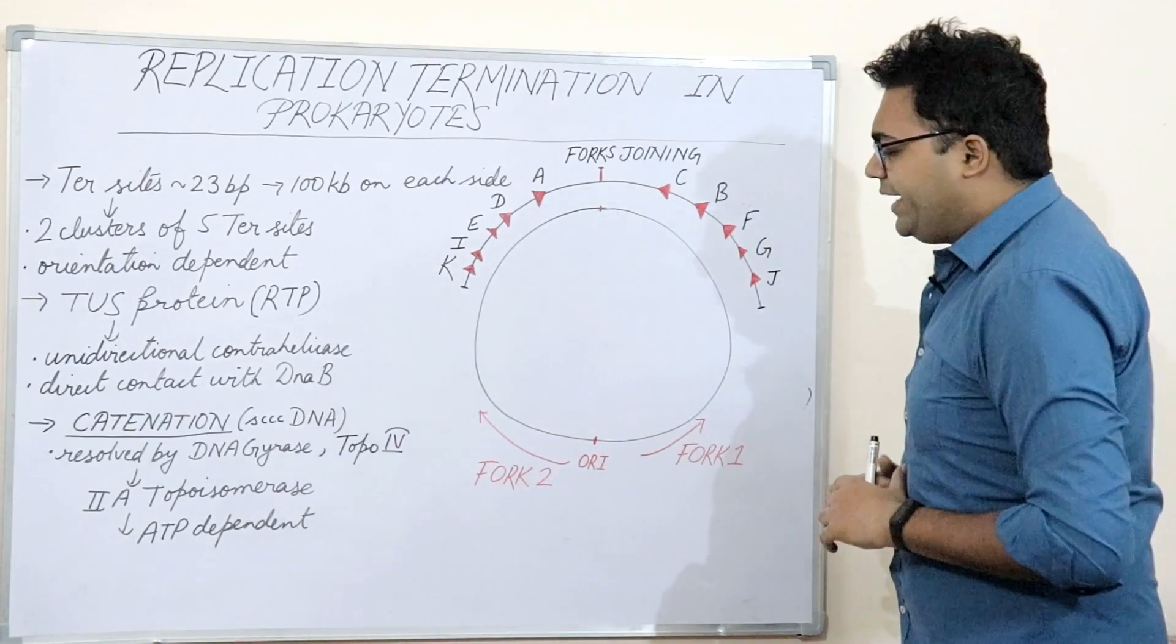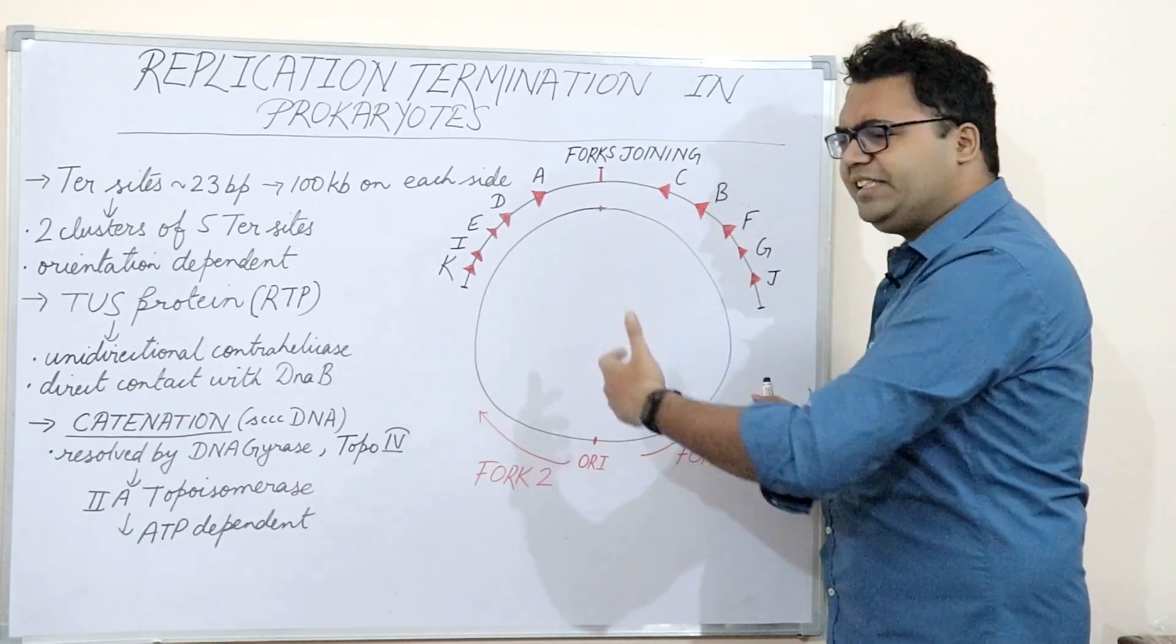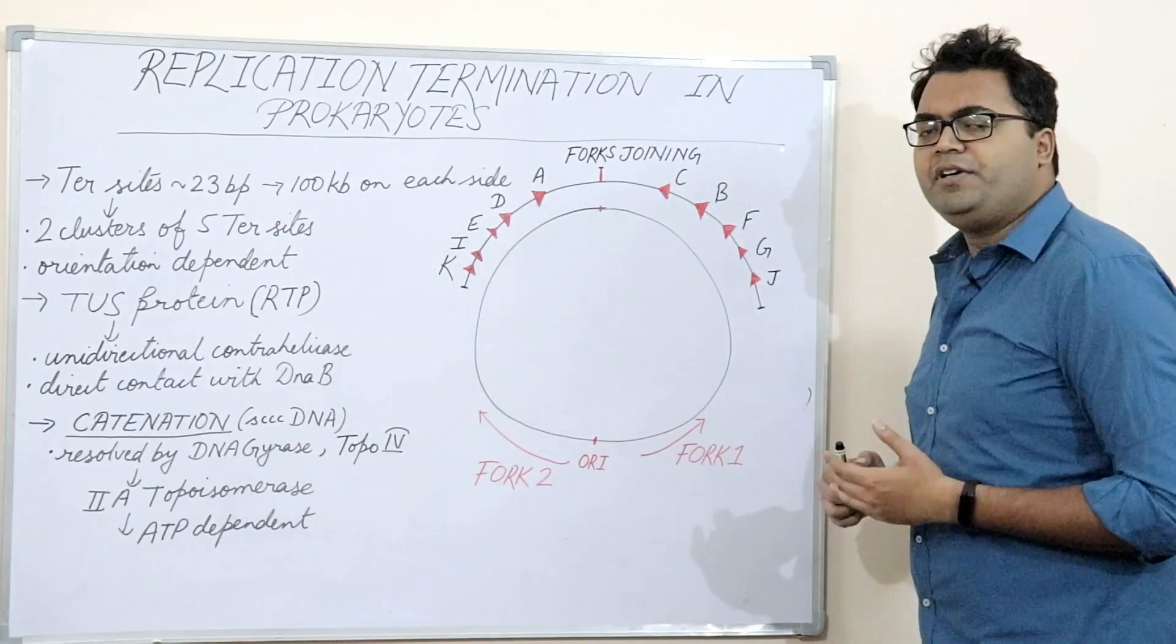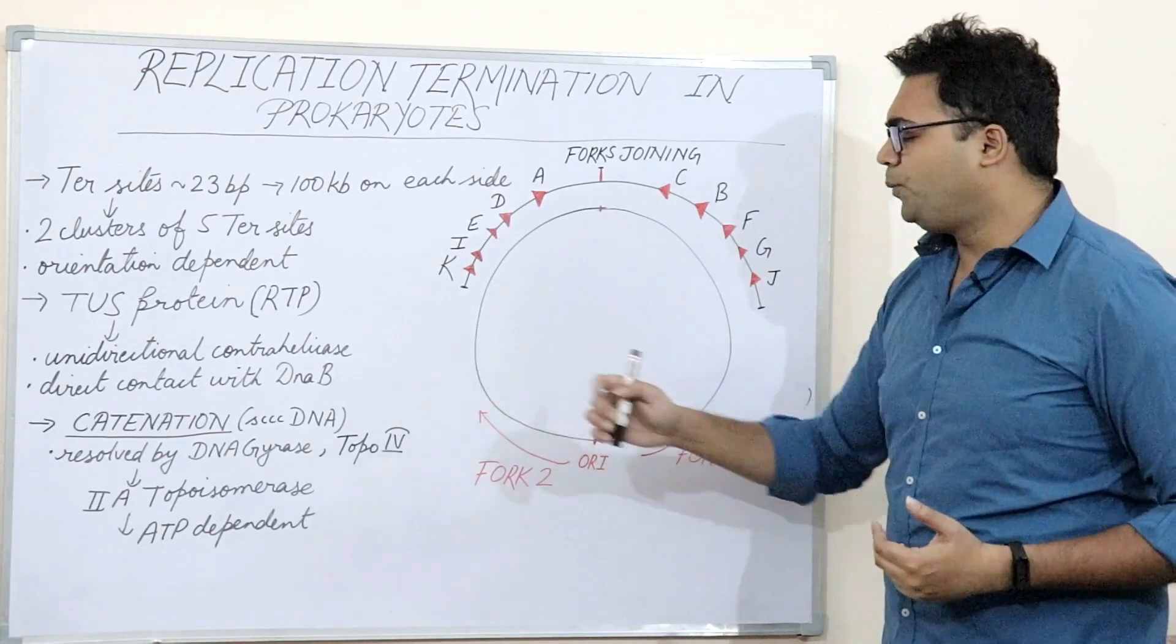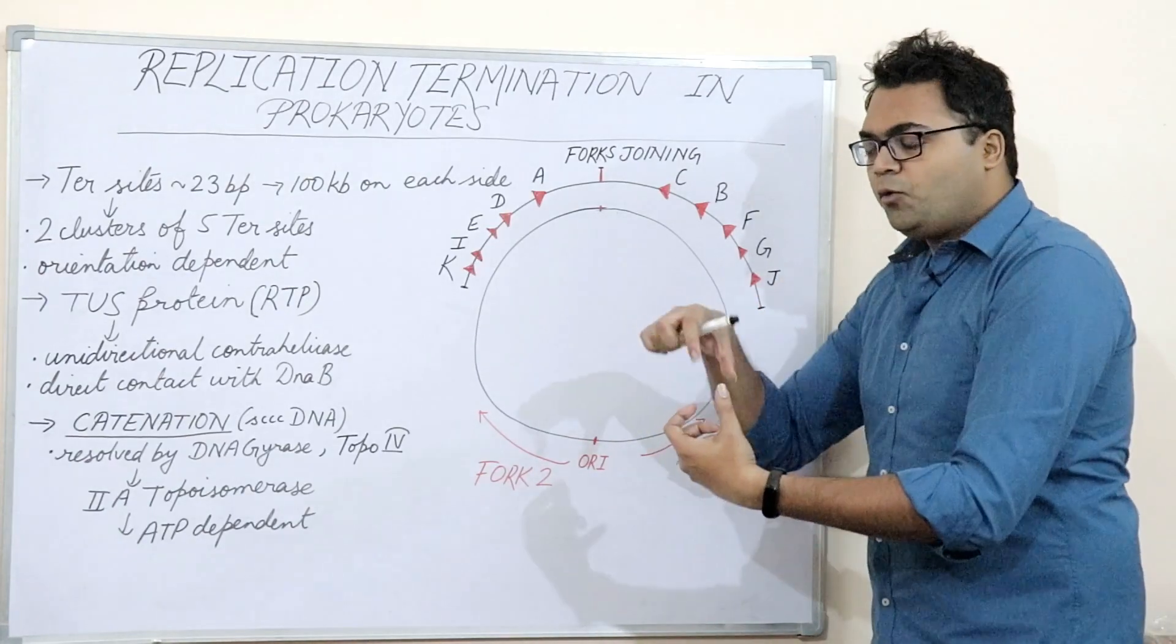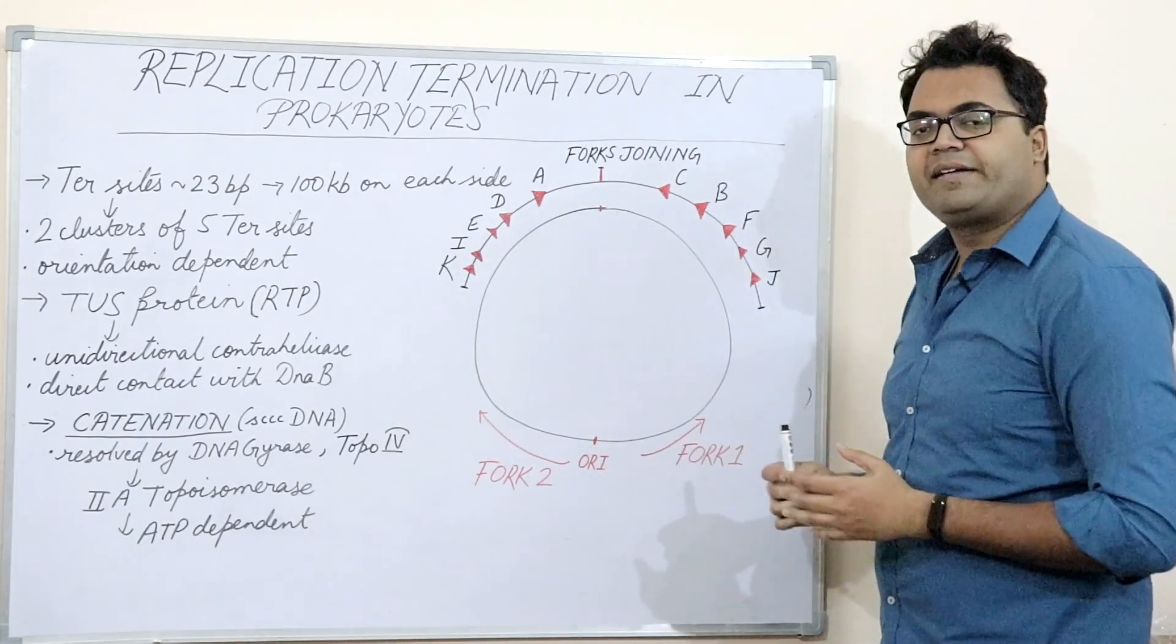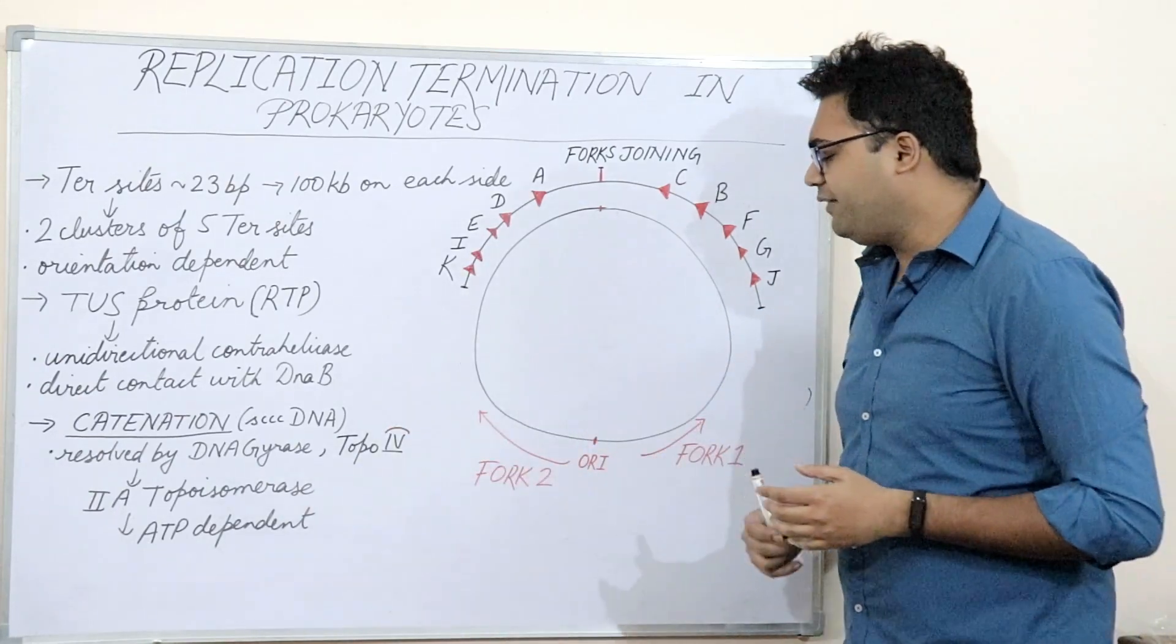Now, there is something also known as catenation. Catenation is a process by which the two specific single-stranded DNAs are held together and they cannot really come out of each other. It is known as single-stranded covalently closed circular DNA, SCCC DNA. Now, how do you relieve or alleviate catenation? The simple answer to that question is topoisomerases, especially class 2 because class 1 topoisomerases would trim one DNA strand at a time and are ATP independent. Whereas, we need a very quick process here. So, we would go for class 2 topoisomerase, specifically class 2a.